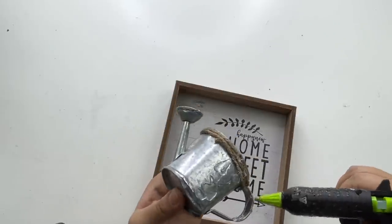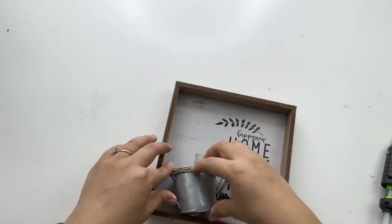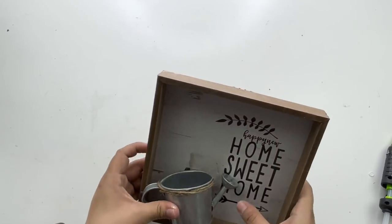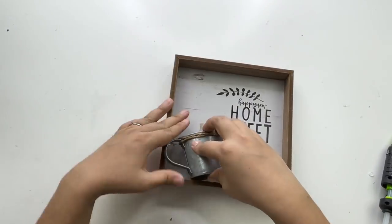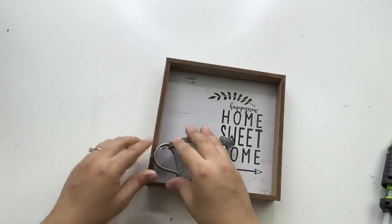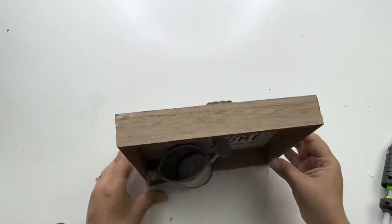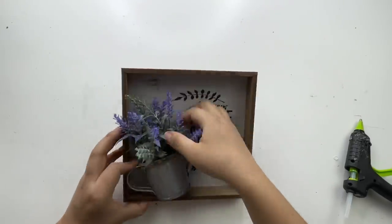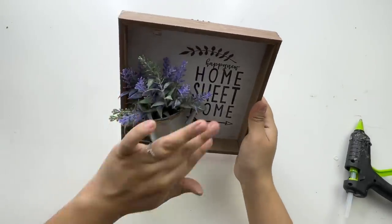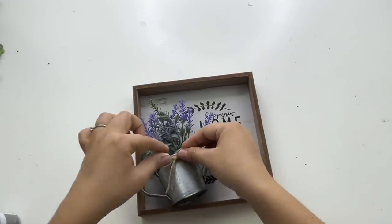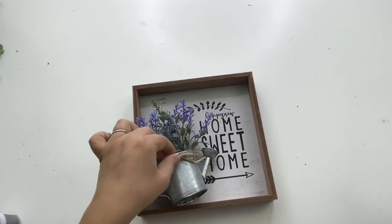Now I'm going to just use some hot glue to glue my little planter. And what I love about this is that you can use this all year round by just switching the little greenery. So for right now I'm using this beautiful lavender pick that I got from Walmart. And to finish it off, I will be adding this little jute twine bow. And look how beautiful this turned out.